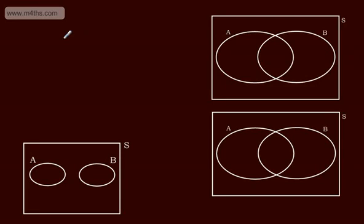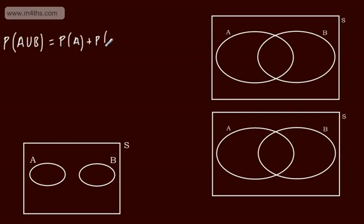In this video, we're going to continue our work with probability and look at the addition rule. The addition rule states that the probability of A union B is equal to the probability of A plus the probability of B minus the probability of A intersection B. And this is what we call the addition rule.